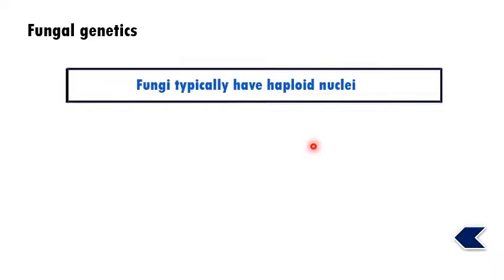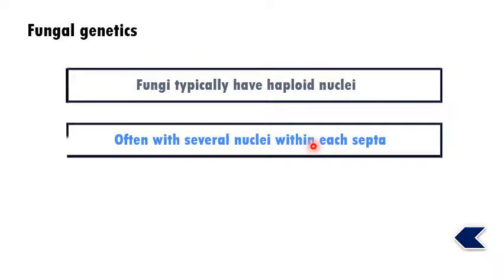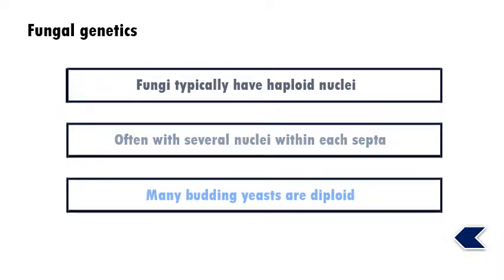When it comes to fungal genetics, fungi show haploid nuclei. Though a single nucleus is haploid, fungi usually have several nuclei within each septum, giving a multinucleate or binucleate condition — these are the usual conditions seen in fungi, which gives a new dimension to fungal genetics. Some budding yeasts can be diploid in nature, but this is very rare.